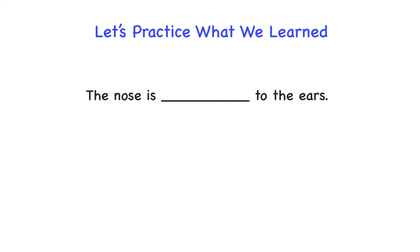The nose is blank to the ears. The answer is medial — the nose is medial to the ears. This is appropriate because they are all on the same plane, and the nose is closer to the midline of the body than the ears are. If we flip it, we can say the ears are lateral to the nose. Medial and lateral always require structures to be on the same plane.